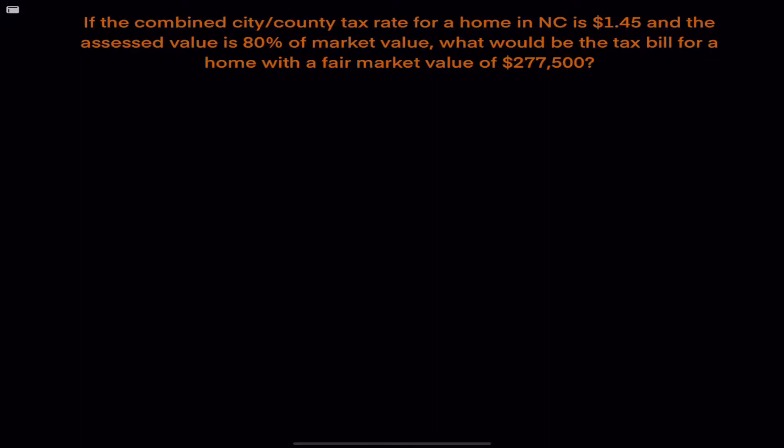Today we're going to work on an ad valorem tax problem. Ad valorem means 'according to value,' so we're talking about real property taxes. Here we have a problem: if the combined city-county tax rate for a home in North Carolina is $1.45 and the assessed value is 80% of market value, what would be the tax bill for a home with a fair market value of $277,500?